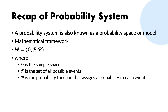In summary, we have the concept of probability system — a mathematical framework also called probability space or probability model — which describes an experiment. It defines the sample space omega, the set F of all possible events, and the probability function.